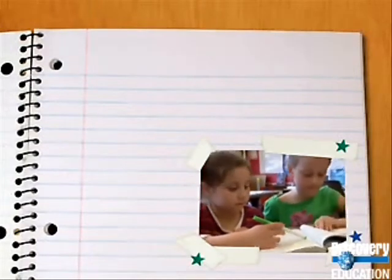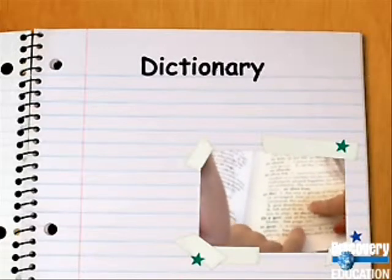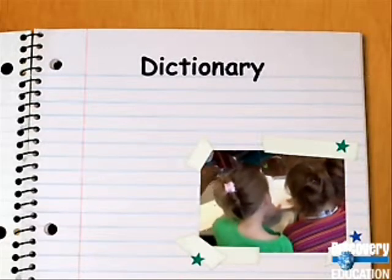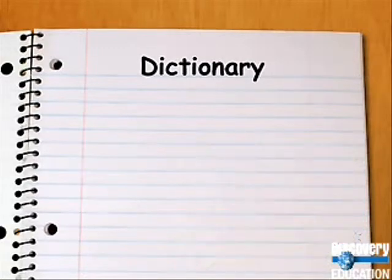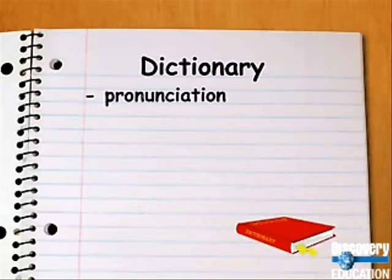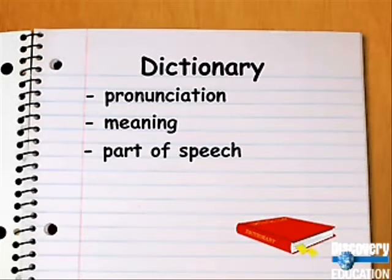When you are reading or researching a topic, you may encounter unfamiliar words. The dictionary is a good place to find the meanings or definitions of these words. When you look up a word in the dictionary, you can learn the pronunciation and meaning of the word, find out whether it's a noun, verb, or some other part of speech, and also learn the word's origin — the language that the word originally comes from.